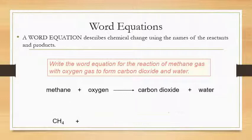The symbolic equation for that same reaction is: CH₄ + O₂ → CO₂ + H₂O. CH₄ is the symbol for methane, O₂ for oxygen, CO₂ for carbon dioxide, and H₂O for water. The word equation is on top and the symbolic equation is on the bottom.